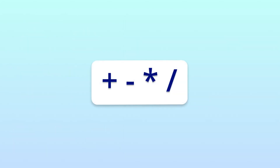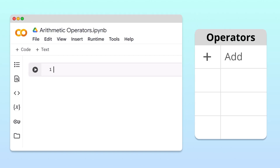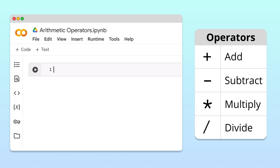We'll start off simple with the plus, minus, star, and slash operators. In Python, these operators let us add, subtract, multiply, and divide numbers, just like you learned in grade school.